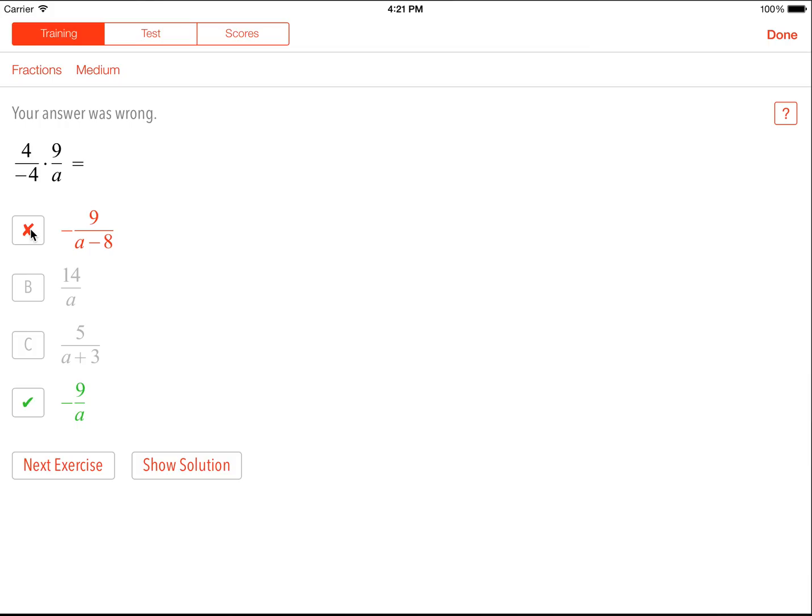Now the thing is, my answer was wrong. And there's a really big problem with multiple choice tests. If I get something wrong, I never see my mistake. I never know where I was wrong. What we provide you with is the following. If you got something wrong, click on Show Solution.